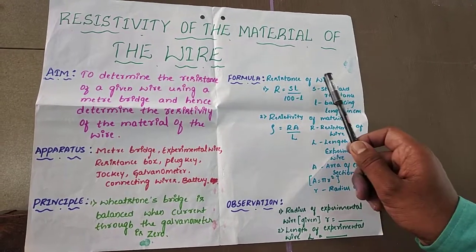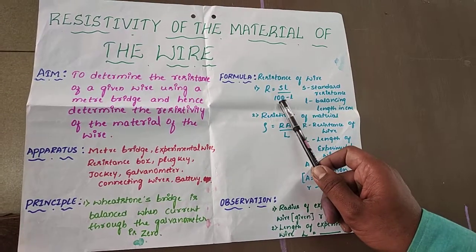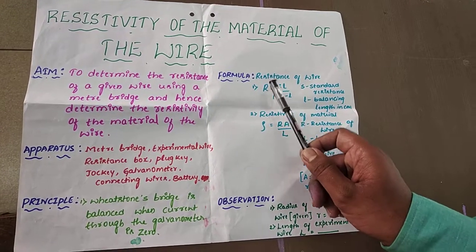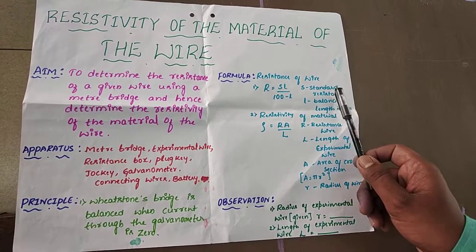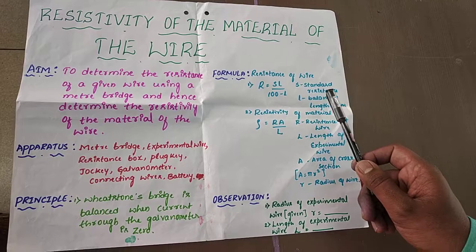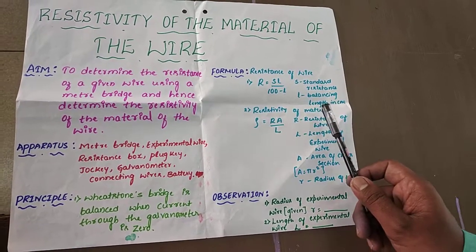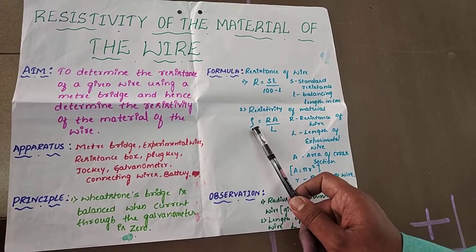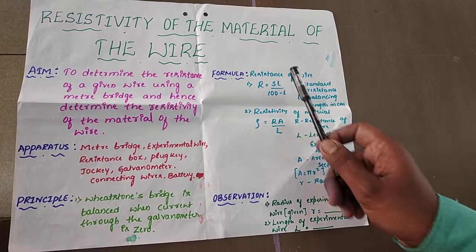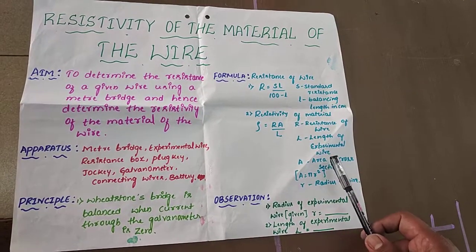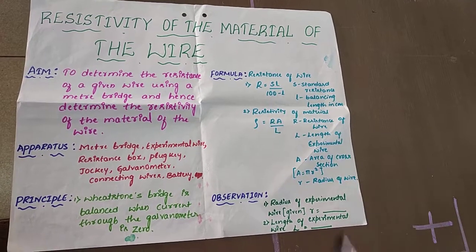The formula required for this experiment: resistance of the wire is R = S × L / (100 − L), where R is the resistance of the wire, S is the standard resistance, and L is the balancing length. The next formula is resistivity of the material of the wire: ρ = R × A / L, where R is the resistance of the wire, A is the area of cross-section (that is π r²), and L is the length of the experimental wire.